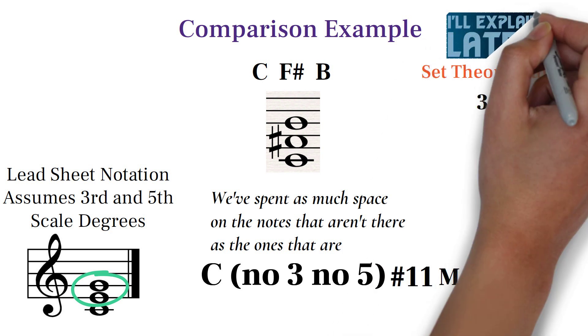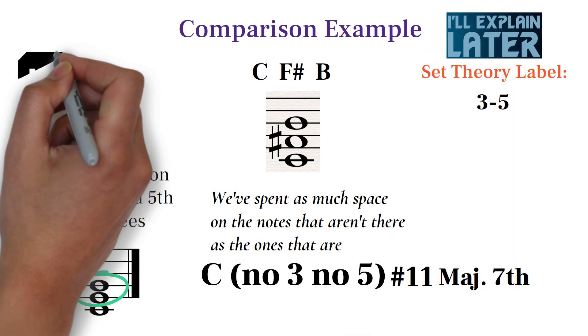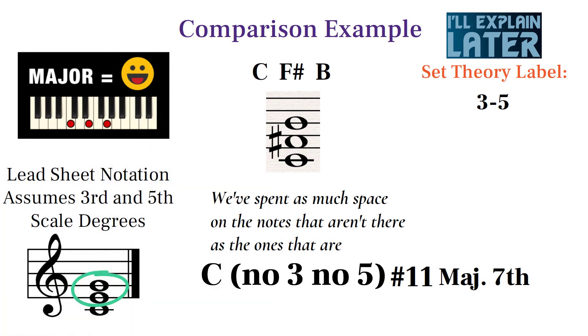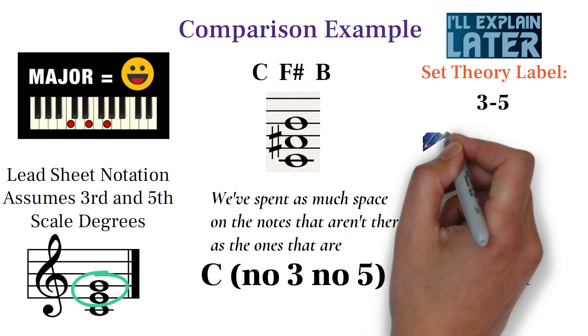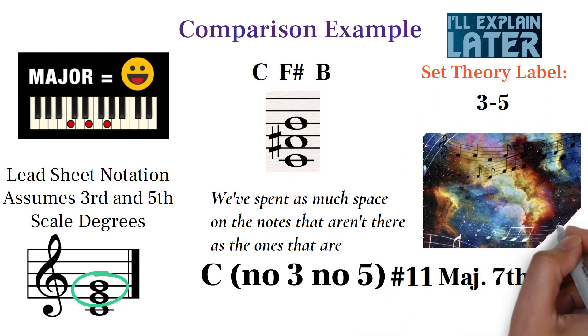The difference is that lead sheet notation is practically only equipped to describe chords that closely resemble major chords with major scale extensions, while set theory can describe all chords with simple labels.